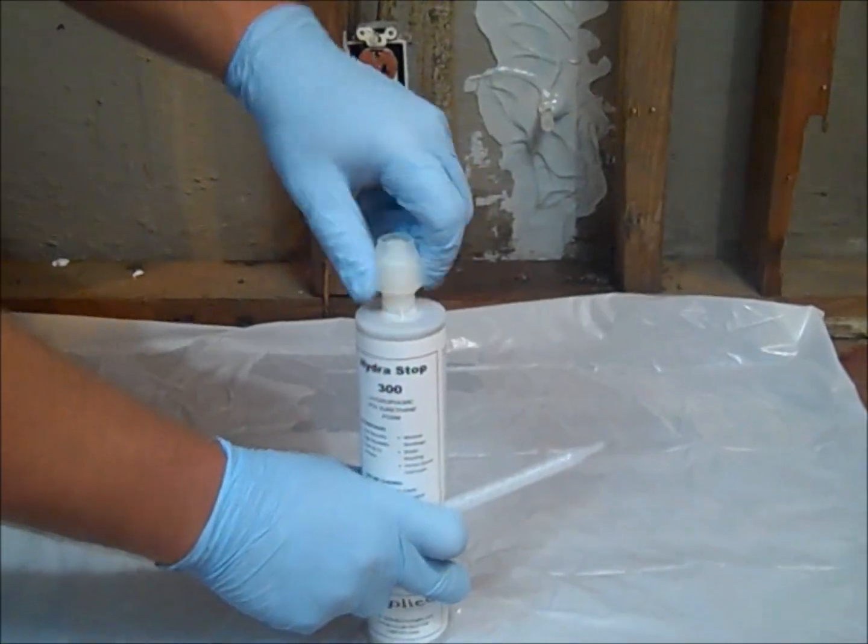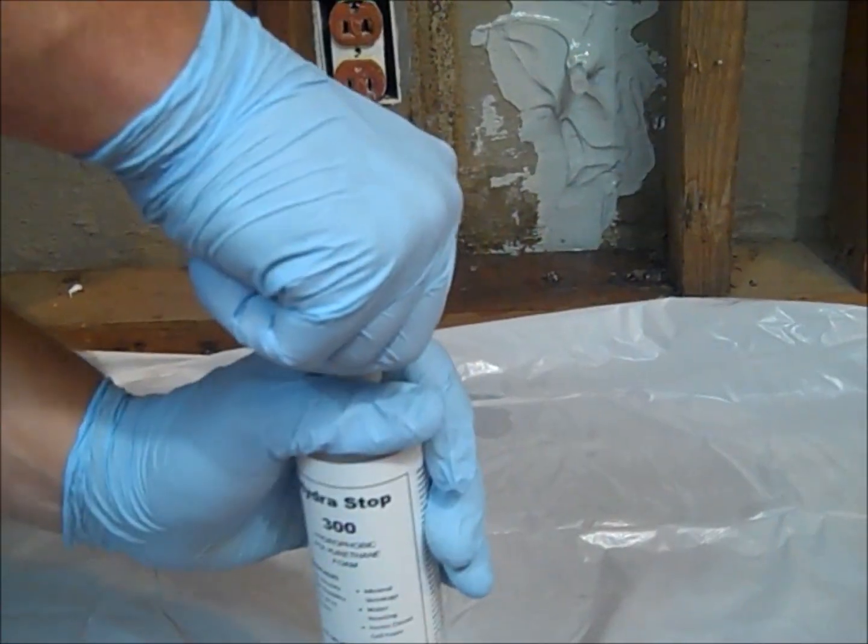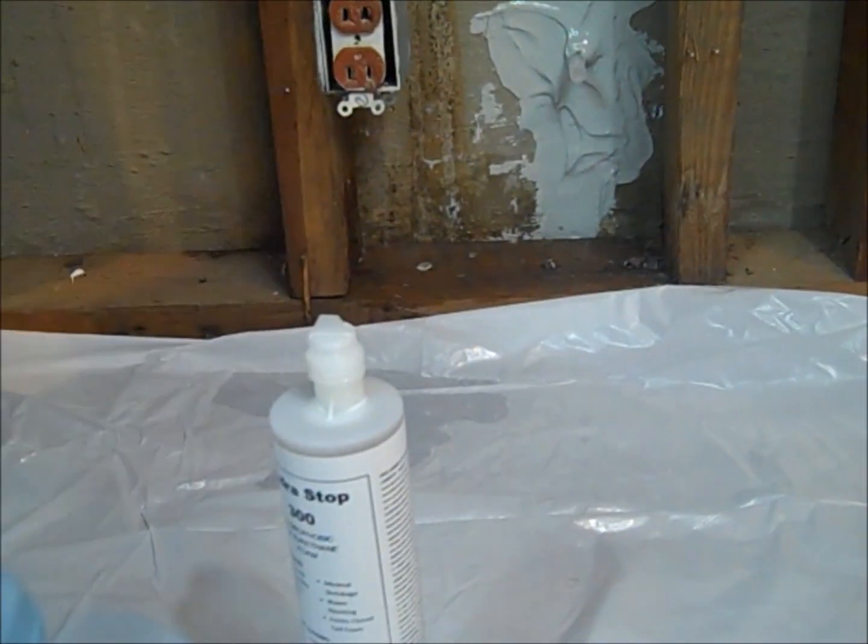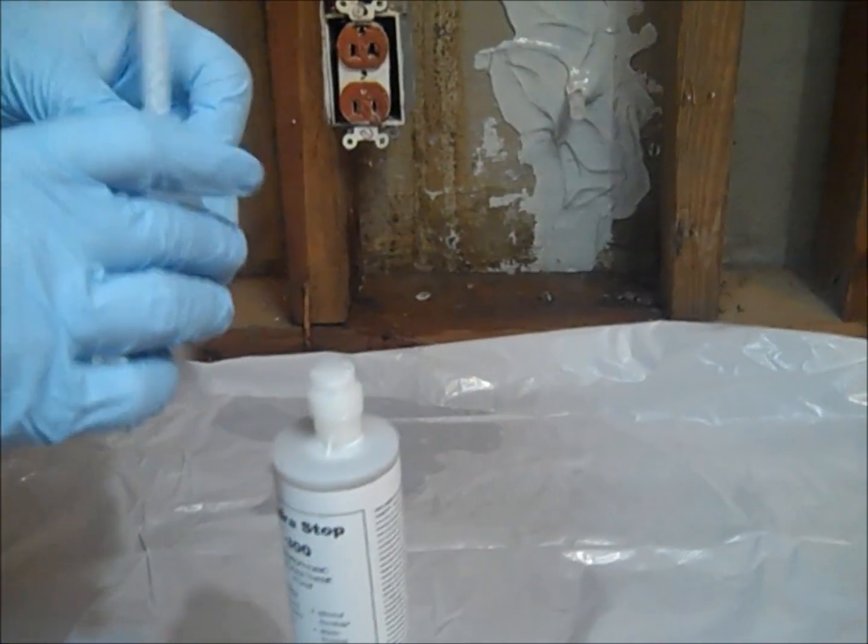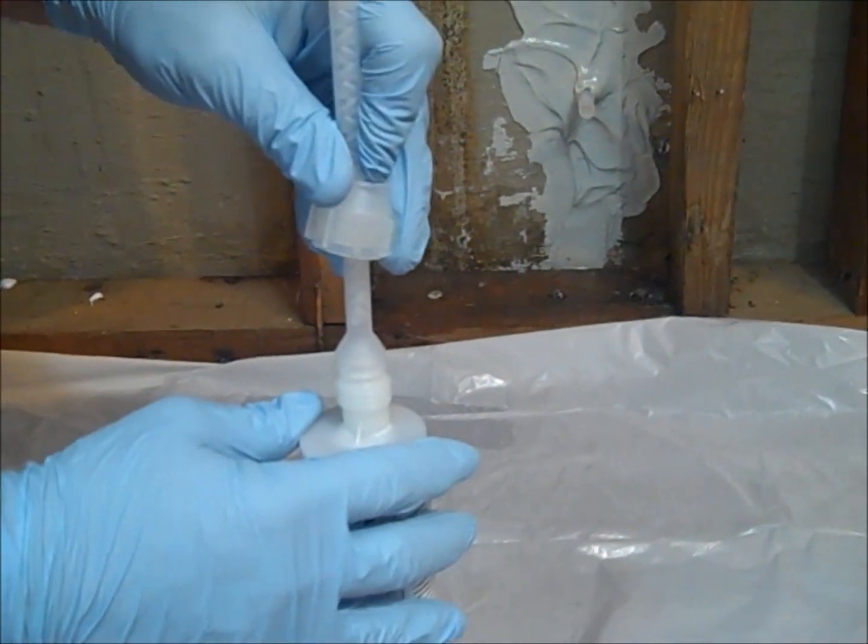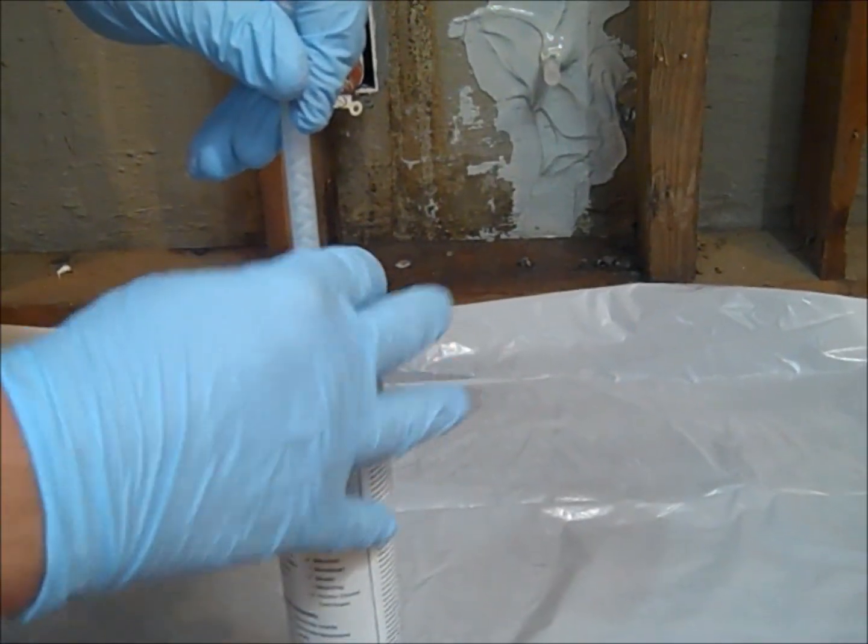Unscrew the cap from the Hydrostop 300 cartridge. Extract the plugs in the neck of the cartridge. Place the quarter inch by 24 element static mixer onto the neck of the cartridge and place the cap over the static mixer. Tighten the cap securely. Load the cartridge into the injection gun.